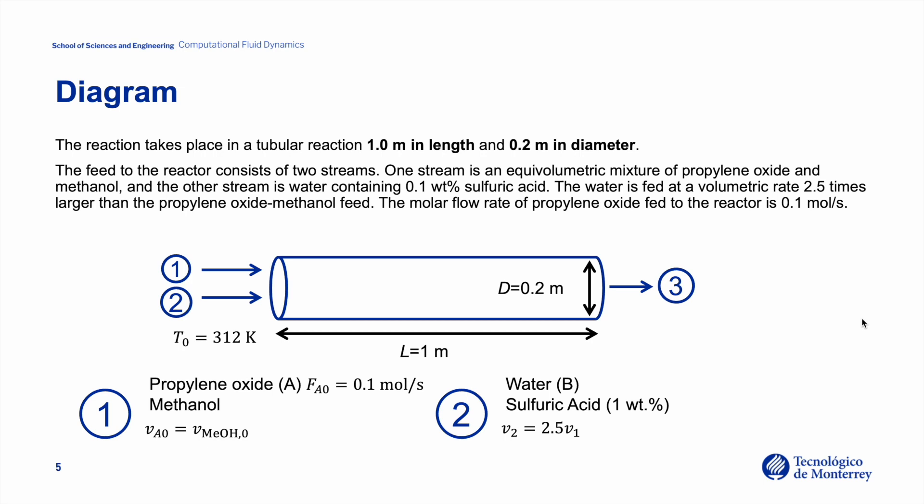We consider two separate feed streams at the inlet. The first stream is composed of propylene oxide and methanol, with a molar feed rate of 0.1 mole per second of propylene oxide. The second stream is a solution of sulfuric acid at one percent by weight in water. The volumetric flow rate of this second stream is 2.5 times that of the first stream. When these streams are mixed, the inlet temperature is 312 Kelvin due to the heat of mixing.